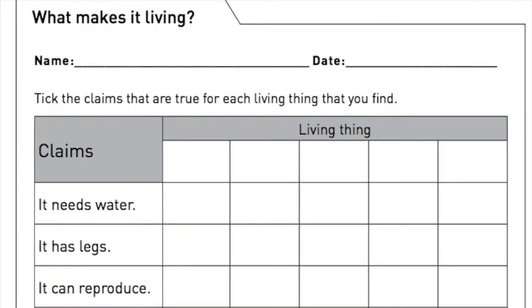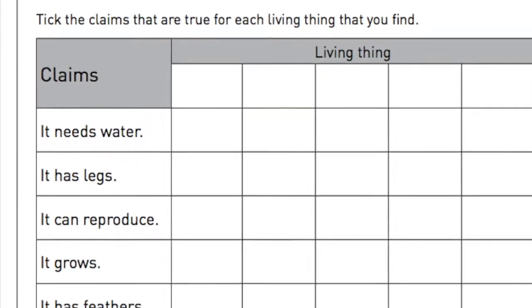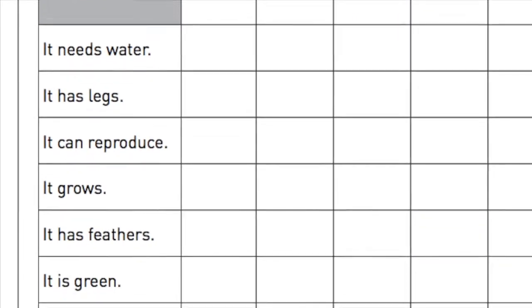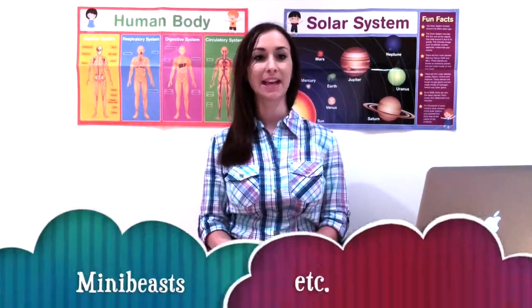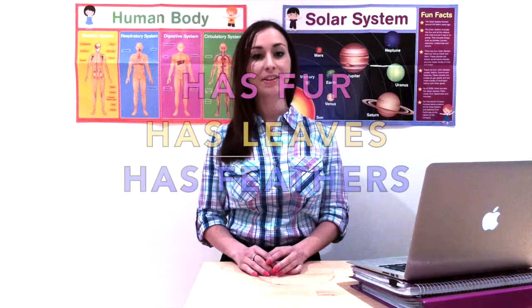As a follow-up activity, go through the 'What Makes It Living' chart from Bird Feathers or Leaves as a class. Review the living things categories such as mammals, plants, reptiles, birds, and minibeasts, and sort pictures of these animals into categories. Students can also come up with their own definitions of living things such as 'has fur', 'has leaves', 'has feathers', and then share their findings with the class.